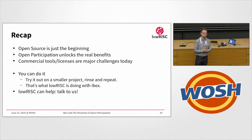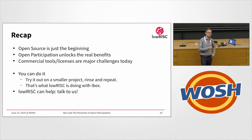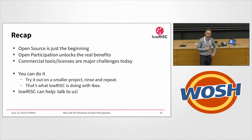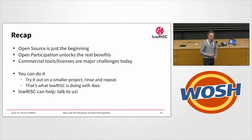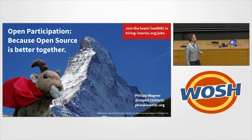To recap: open source is just the beginning. The source is the base, but it's not the final goal. What I've termed open participation unlocks the real benefits when you go open source. Commercial tools and licenses are a major challenge — not just cost, but accessibility and obeying license restrictions. This is something everybody can join in on, not just lowRISC. Give it a try with smaller projects; that's what we did with IBEX. lowRISC is available for hire. Go for open participation, because open source is better together with it. We're hiring, and Carl is waiting for you at GitHub.